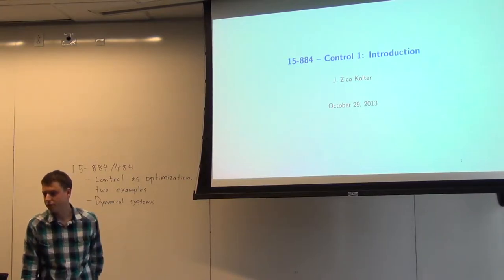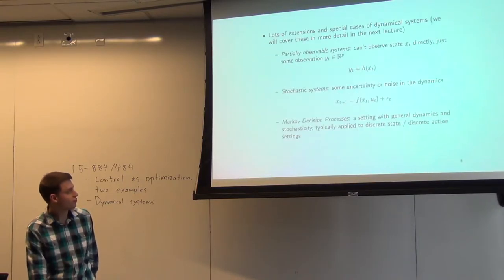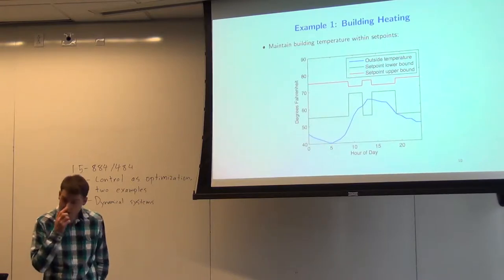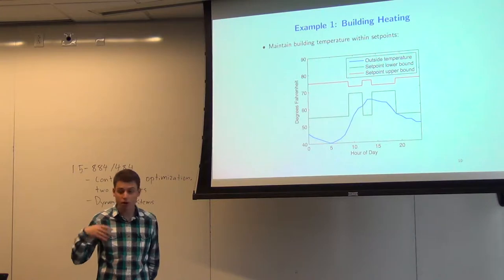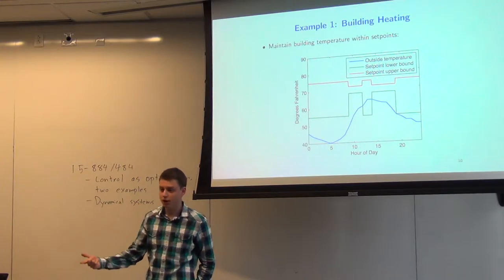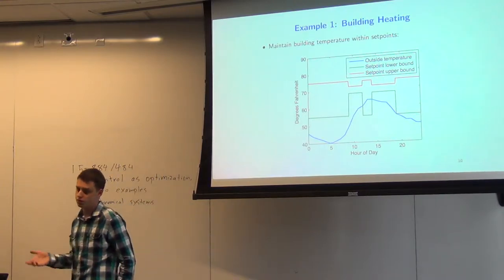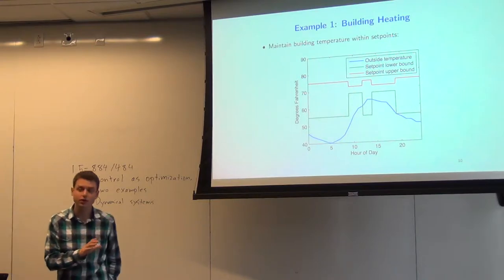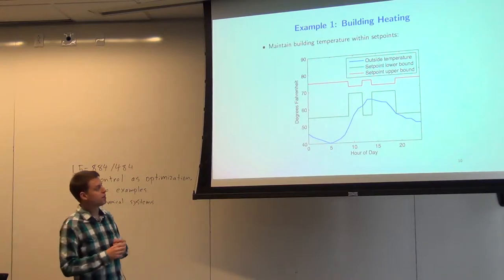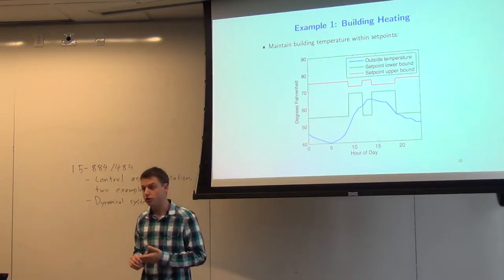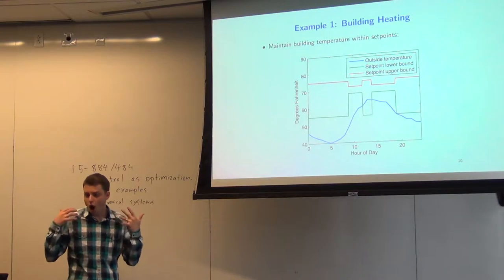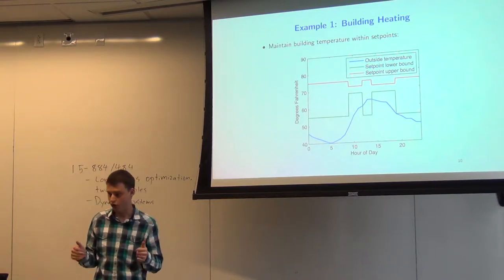Were there any questions from last time? We started covering a basic introduction to dynamical systems, controls, and optimization. These two topics we're going to cover a lot more in upcoming lectures. Today we'll talk a lot more about dynamical systems, and later we'll cover optimal control and controls optimization — dealing with things like uncertainty in the dynamics or more complex dynamics. The core of what we're doing is thinking about states that evolve over time and optimizing some objective under that constraint.